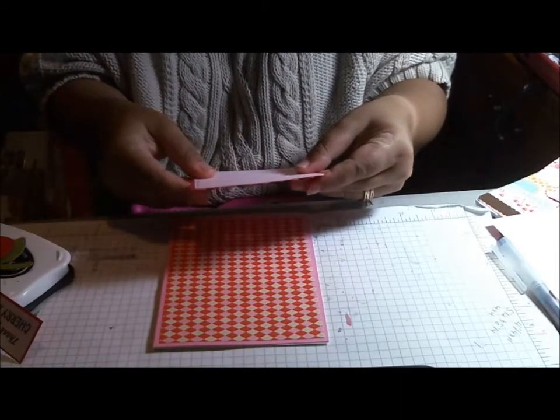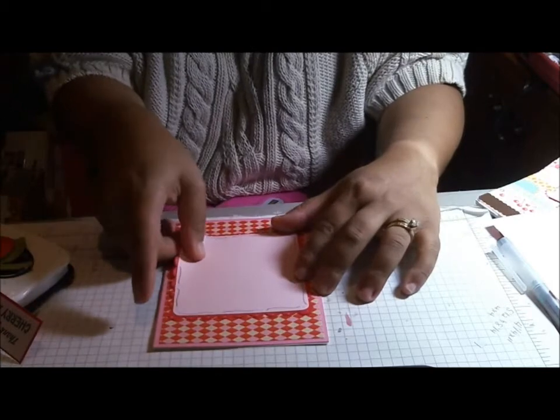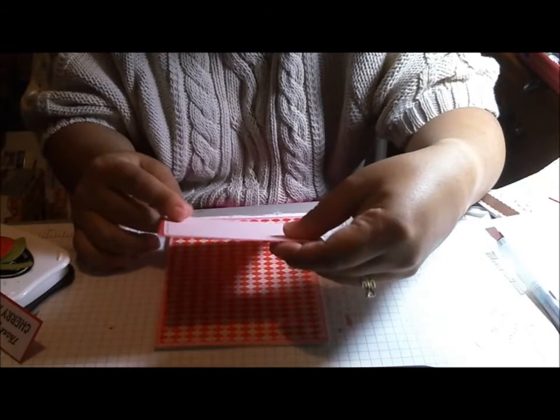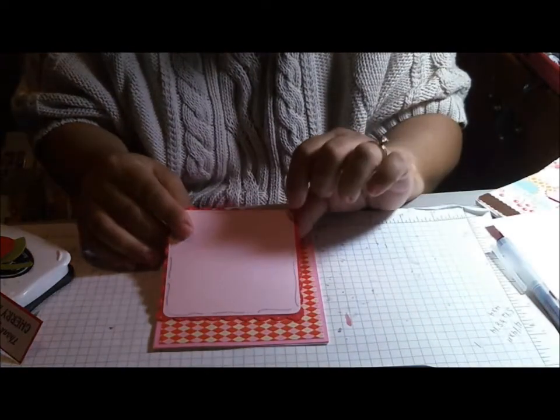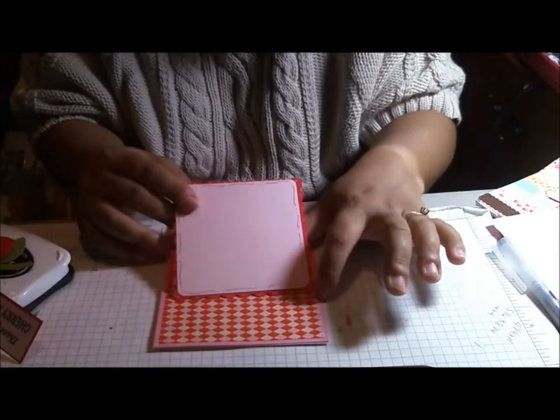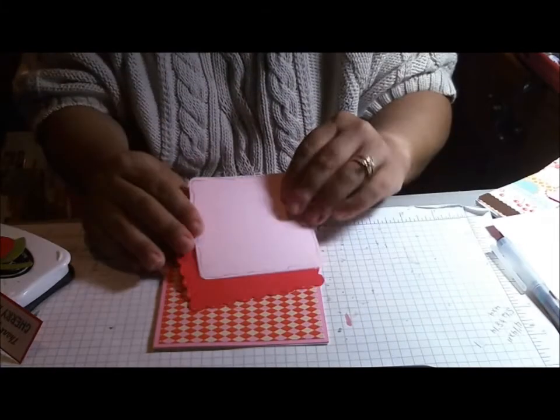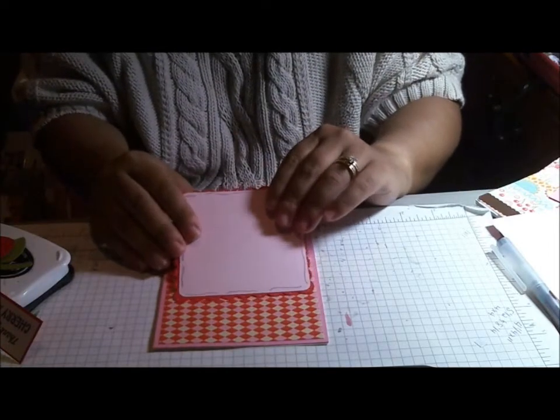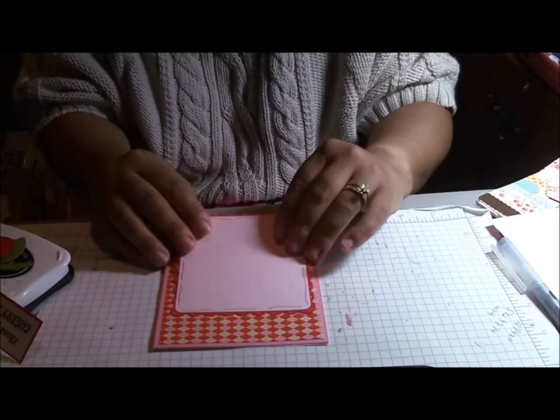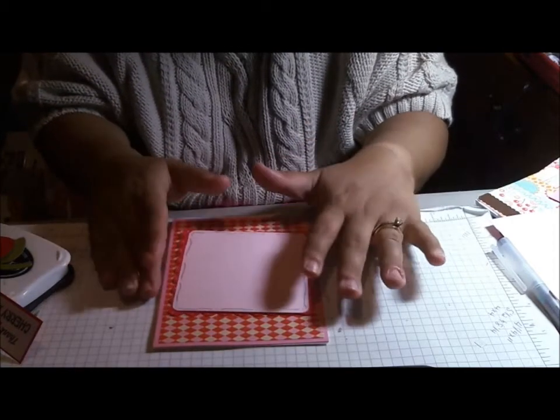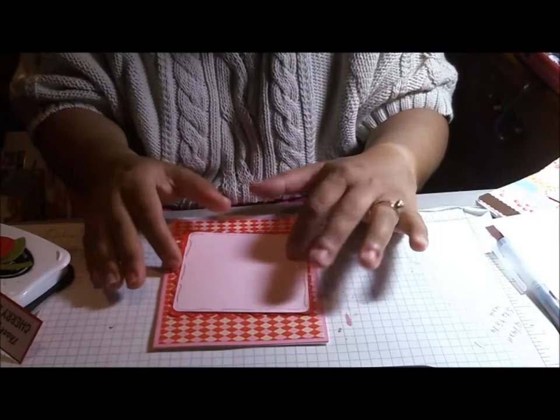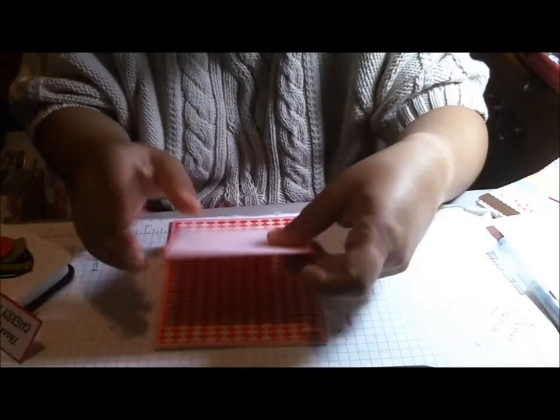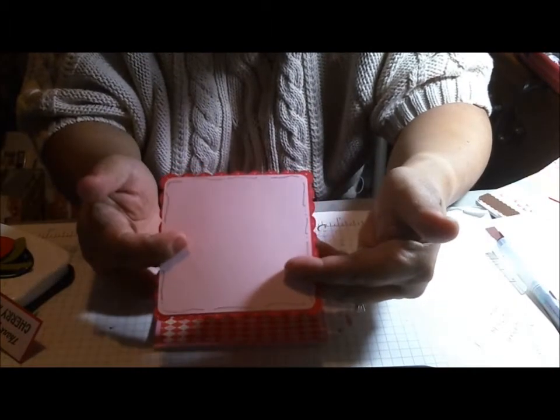What I've done for my mat is I used the Art Philosophy cartridge, and I used this rounded corner square and scallop. My rounded square is three and a half, and I cut the scallop at three and three quarters, and it fits perfectly. If you like a larger scallop, I recommend cutting it at four—you'll get a little bit more scallop showing through. It depends on your preference.